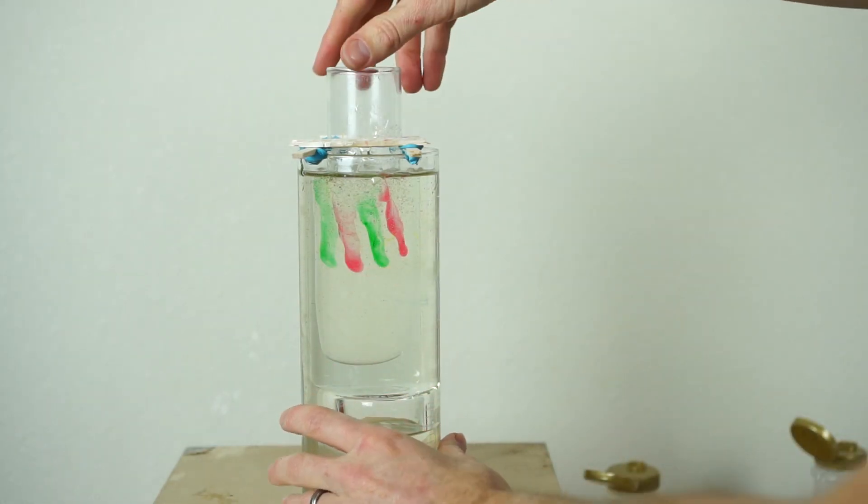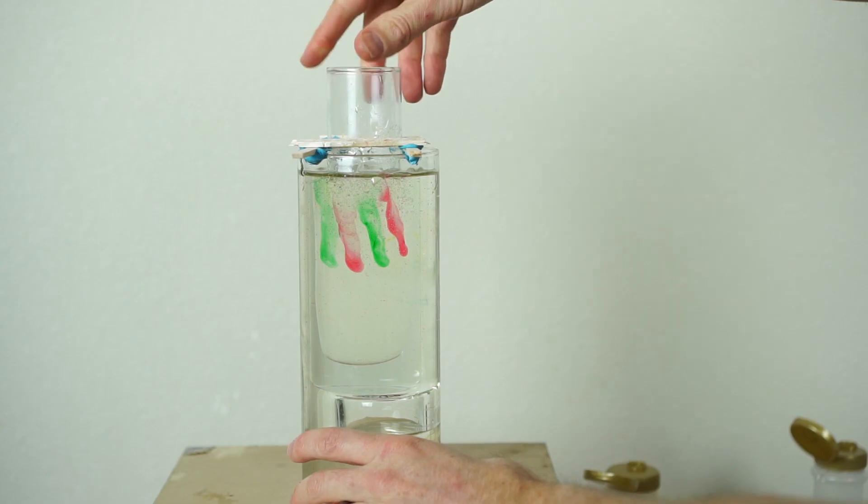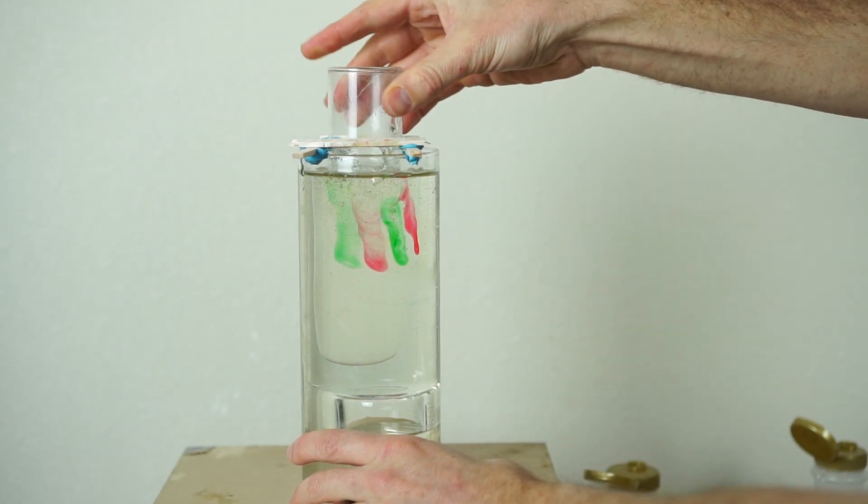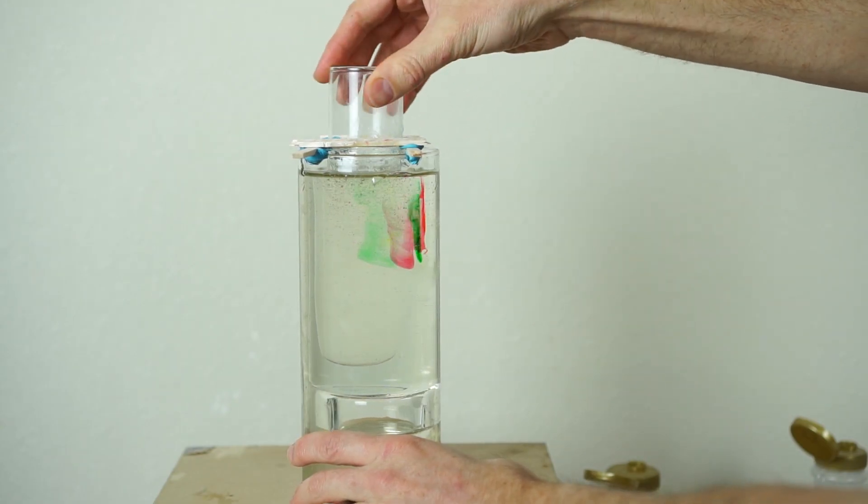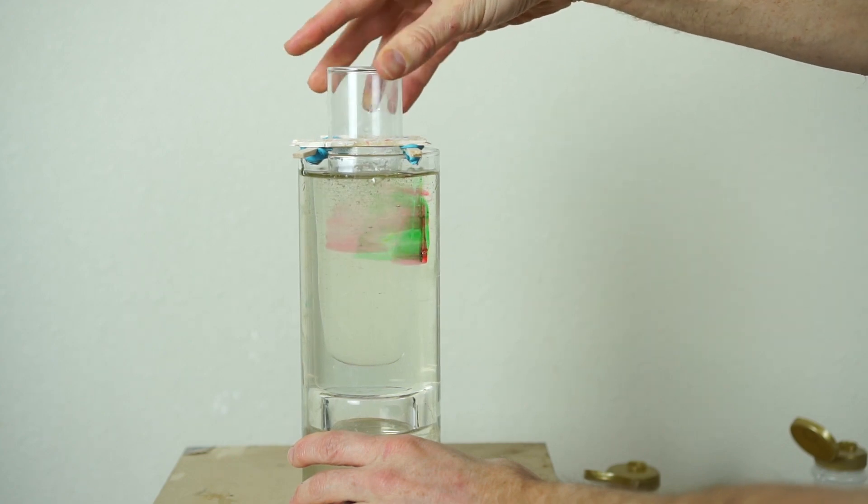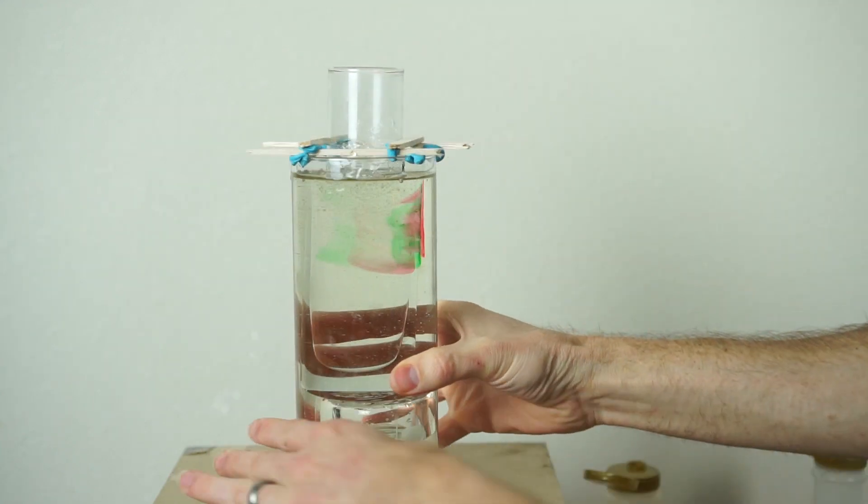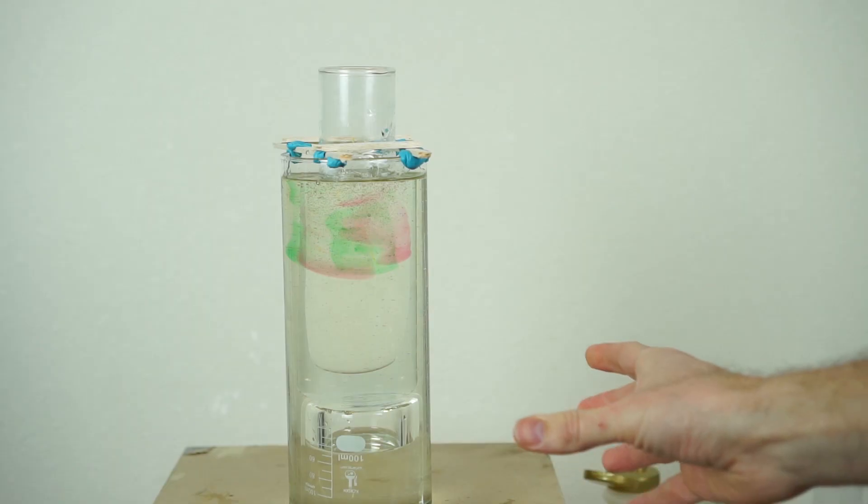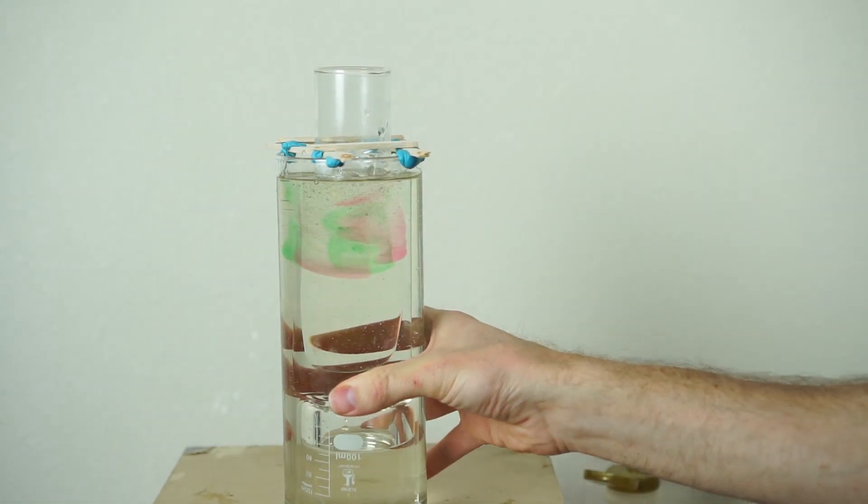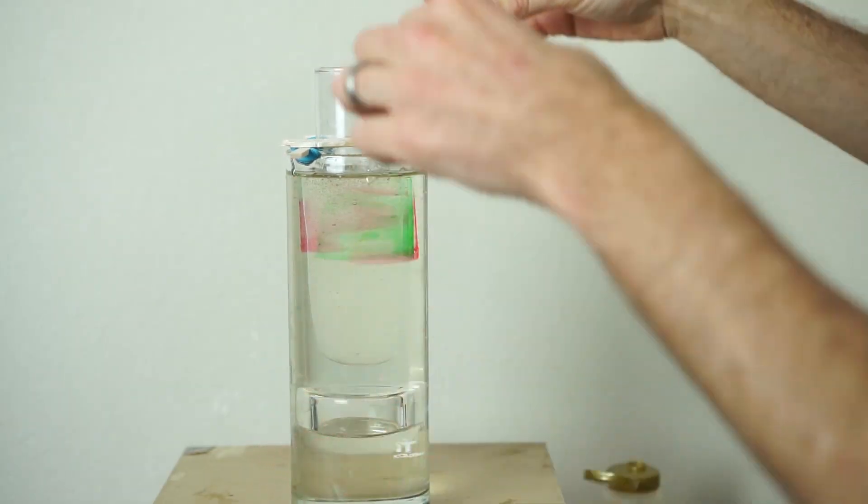Let's try it again with just red and green. These we could see clearer. It looks like they've mixed together. Now let's try to turn them back.